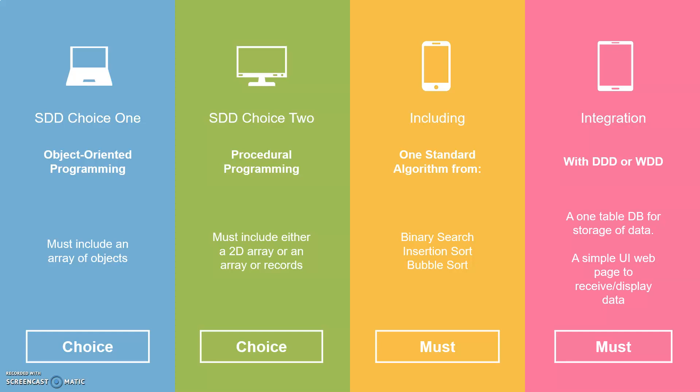If you pick an object-oriented programming task, then you have to include an array of objects, which we're going to learn to use throughout this year. If you pick a procedural programming task, then it has to use a 2D array or an array of records — you've used an array of records at Higher already. It must include one standard algorithm, which we're going to learn about this year as well — so a binary search, or an insertion or bubble sort. That's quite often used for things like a high scores table, so you can put things in order of who's got the least lives left or the most coins collected.